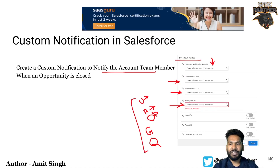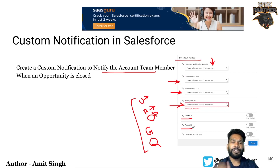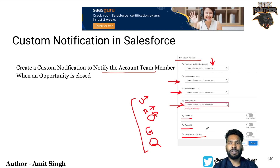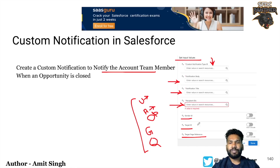So those are five different options you can put as recipient IDs. Then you've got the sender ID — basically who is sending the notification, either an admin user or some specific ID. Target ID is which particular object or record we are sending the notification for — for example, we can put opportunity ID as the target ID. Target page reference determines where the user navigates when they click on the notification; we can put a custom link or a record ID.